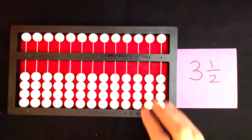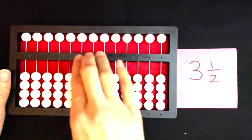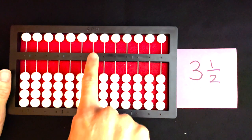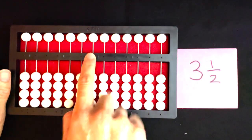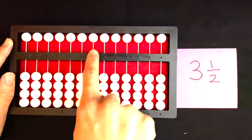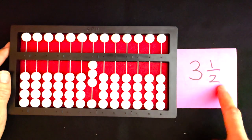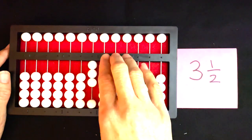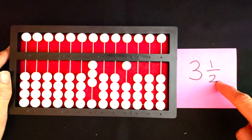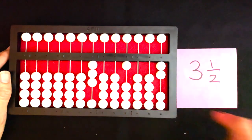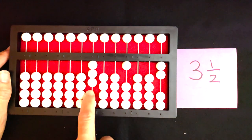We're going to start by setting the whole number in the millions period. I have my hundreds, my thousands, and my millions. I'm going to set three there in the unit of the millions period. Now I'm going to set the one half. I'm going to set the numerator, which is one, in the thousands period and the denominator, which is two, in the hundreds period. So now I have three and a half.